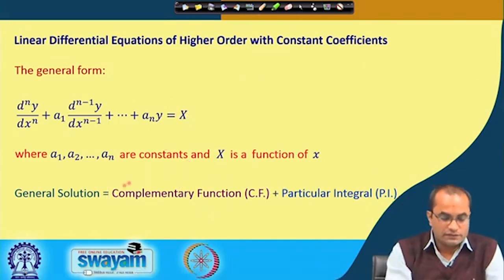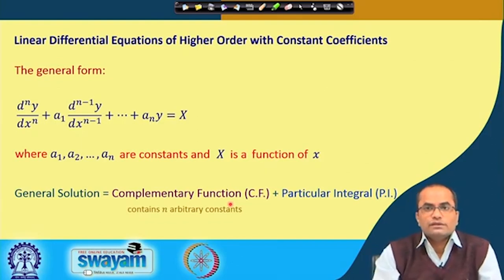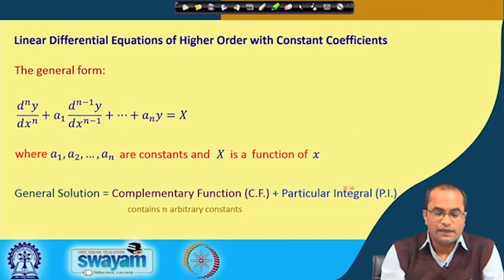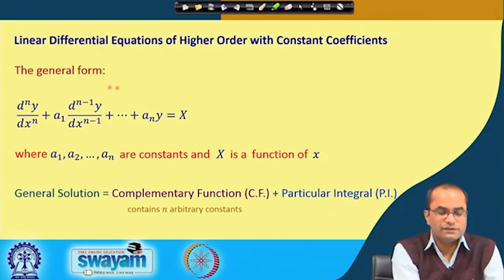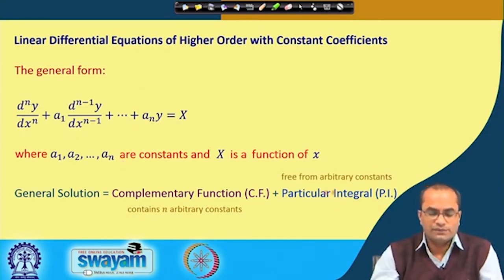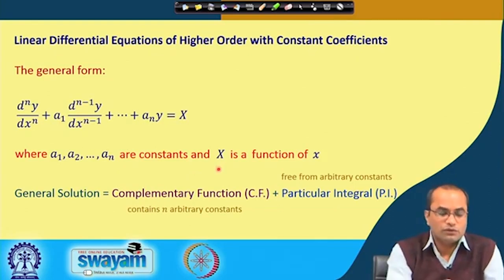The particular integral is any particular solution that satisfies the given equation with the right-hand side x. Since this is the general solution of the homogeneous equation, it will have n arbitrary constants, as discussed before, because this is an nth-order differential equation. The particular integral, being a particular solution of the given differential equation, will not have arbitrary constants — any constant that appears will already be absorbed in the complementary function.